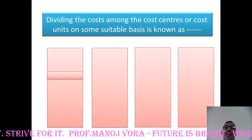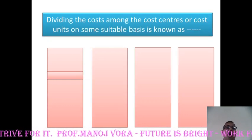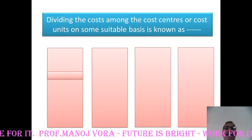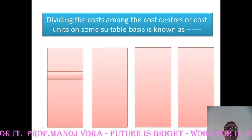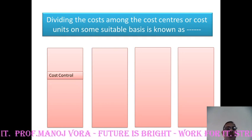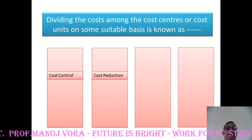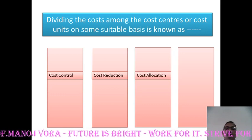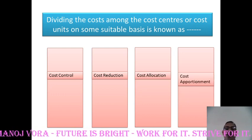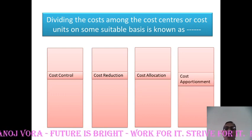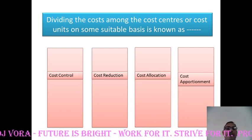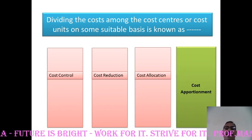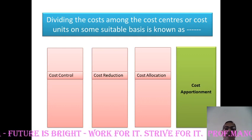Dividing the costs among the cost centers or cost units on some suitable basis can be known as — your first option cost control, second option cost reduction, third option cost allocation, and the fourth option cost apportionment. And the right answer is cost apportionment.